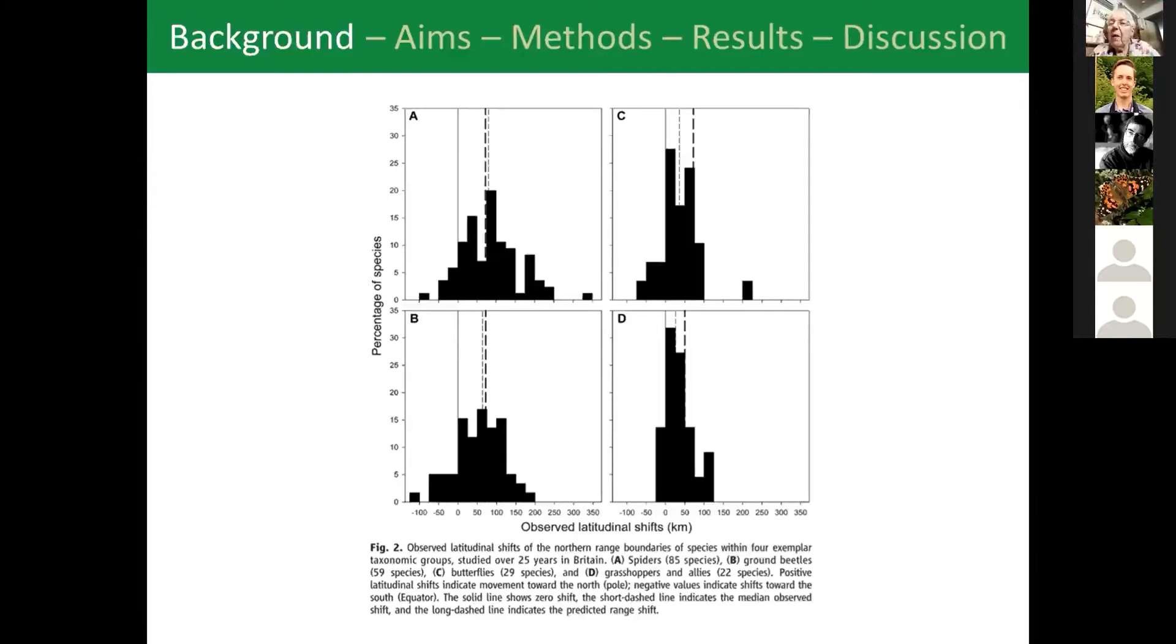Here we have an example from a study 10 years ago which looked at the northern limit of some invertebrates in the UK and how it shifted over 25 years. What you can see is that this is for spiders, beetles, butterflies, grasshoppers, so that over 25 years because this vertical line is a movement of zero kilometres, the majority of species appear to shift their northern limits further north.